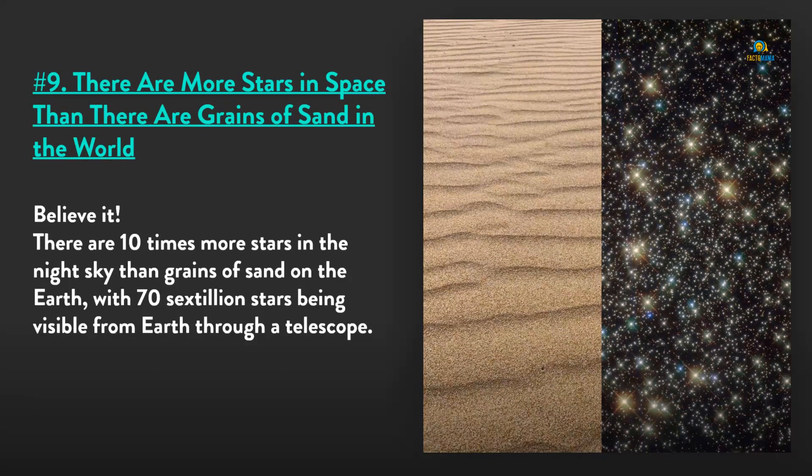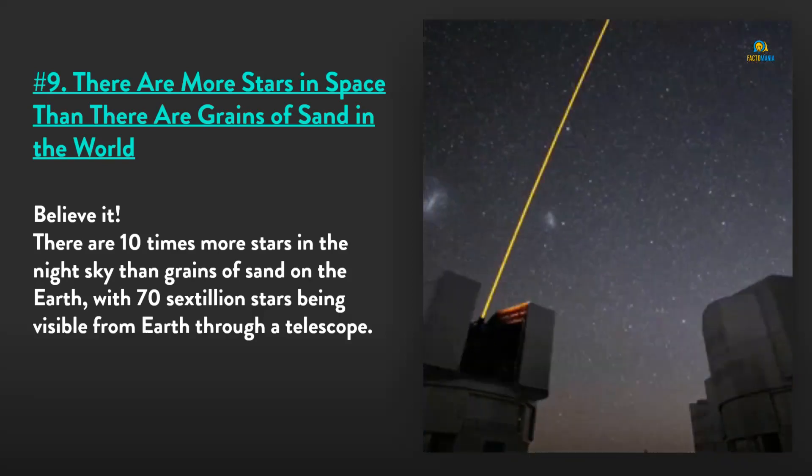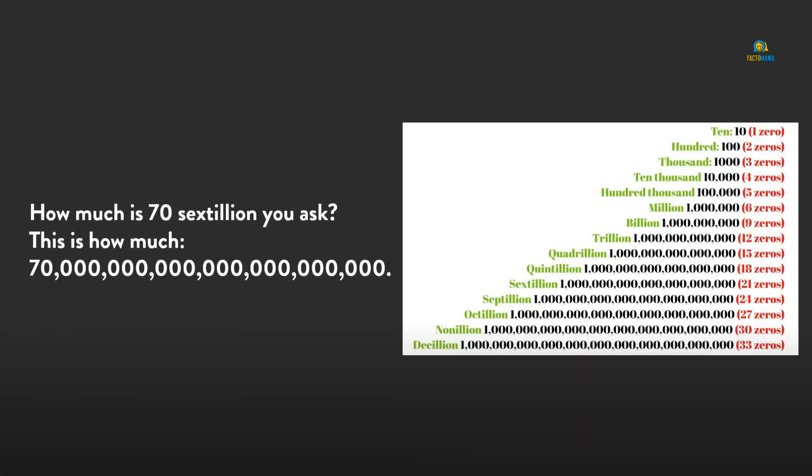Number 9: There are more stars in space than there are grains of sand in the world. Believe it—there are 10 times more stars in the night sky than grains of sand on the Earth, with 76 billion stars being visible from Earth through a telescope. How much is 76 billion, you ask? This is how much.